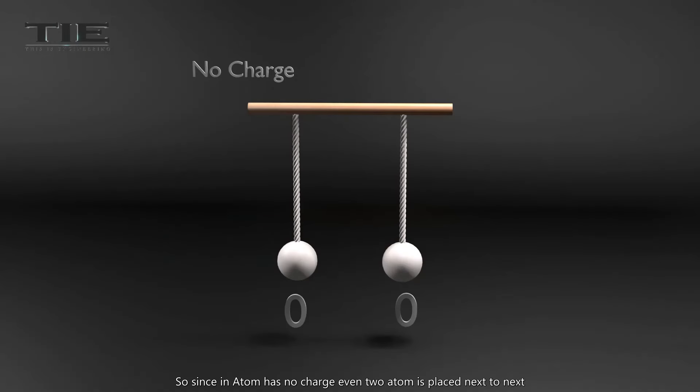So, since an atom has no charge, even if two atoms are placed next to each other, it will happen nothing between them—no attraction and no repulsion.